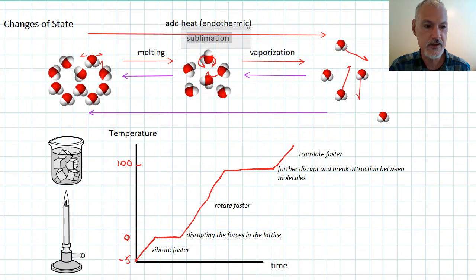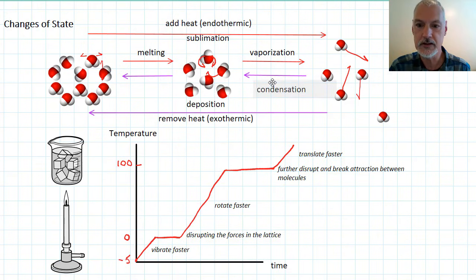Going in the other direction, we need to remove heat. We call those processes where heat is removed exothermic processes, where heat is given off in the process. And just to finish up naming some of these processes, to go directly from a gas directly over to my solid, we call it deposition, to go from our gas to our liquid, condensation, and finally to go from our liquid to our solid, freezing.